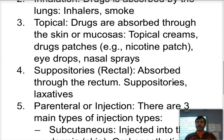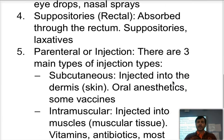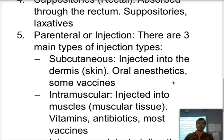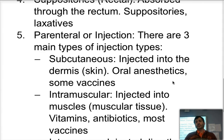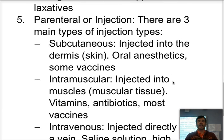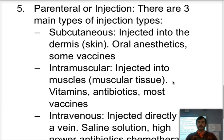The fourth method is rectal or suppositories. They are absorbed through the rectum, normally laxatives or sometimes vitamins. The final method is injection, otherwise known as the parenteral method of input. There are three subtypes of injections: subcutaneous, which is just going to be under the skin, and intramuscular, where it is injected into the muscle tissue itself.